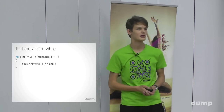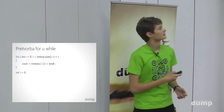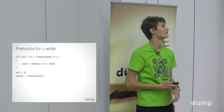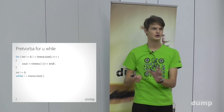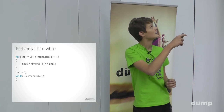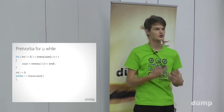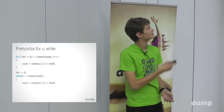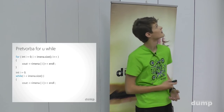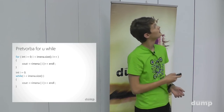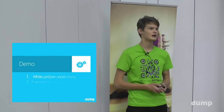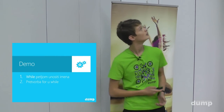Kako bismo istu stvar napisali s while petljom? Početno stanje moramo deklarirati izvan while petlje. Uvjet ostaje: dok je i manji od imena.size(). Unutar while petlje ispisujemo cout << imena[i]. I ne smijemo zaboraviti korak — i++ — na kraju while bloka. Vidite da ta petlja radi isto što i for petlja. Vaša je stvar što ćete koristiti — while je malo jednostavnija, ali i for i while imaju svoje primjere.